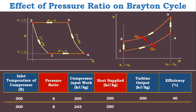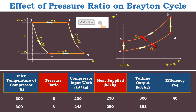Now increasing the pressure ratio from 6 to 8, the work required by the compressor is 250 KJ per kg of air, and the efficiency becomes 45%. From this we can conclude that if you increase the pressure ratio while keeping heat addition constant, it will increase the efficiency of Brayton cycle.